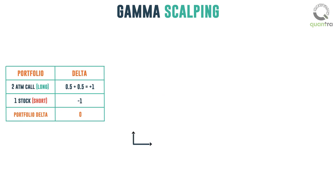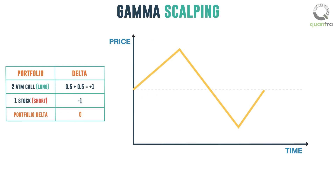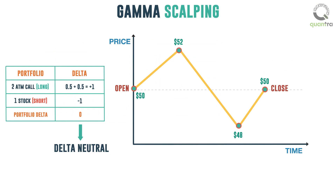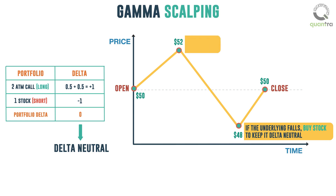The strategy would be as follows. At all steps, we would aim to keep the portfolio Delta neutral. Rule 1: if the underlying falls, buy the stock to keep it Delta neutral. Rule 2: if the underlying rises, sell the stock to keep it Delta neutral. Let us understand this with the help of an example. Remember that the Greek values are just representative to help you understand the concept.